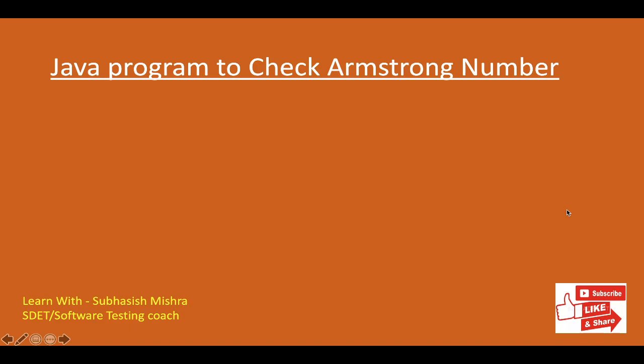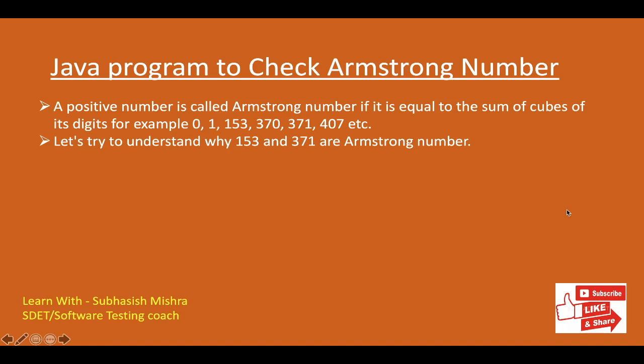So what is an Armstrong number first? A positive number is called an Armstrong number if it is equal to the sum of the cubes of its digits. For example, 0, 1, 153, 370, 371, and 407 — all these are Armstrong numbers.